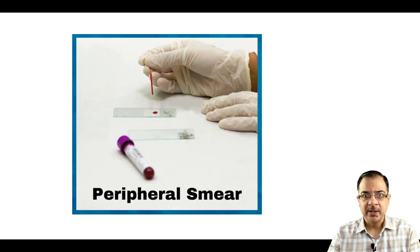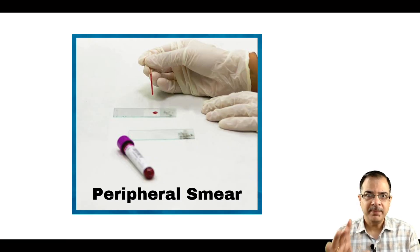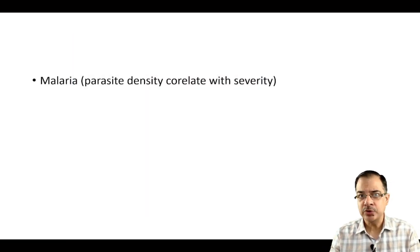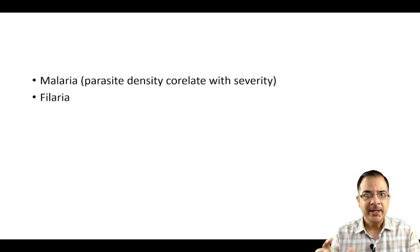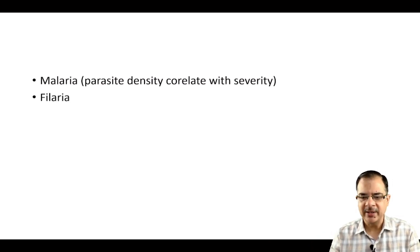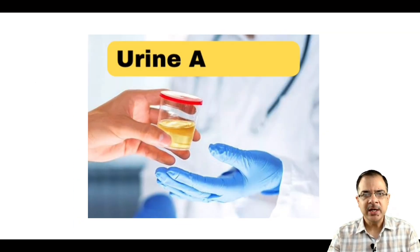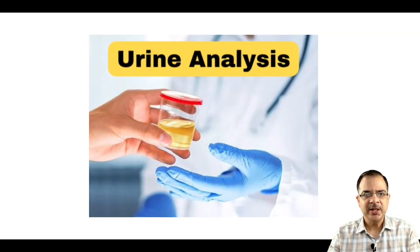Peripheral smear: I always order a peripheral smear because it can be diagnostic — it is the gold standard for malaria, and parasite density correlates with severity. It can also be done for filaria.